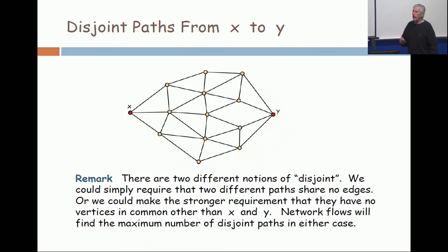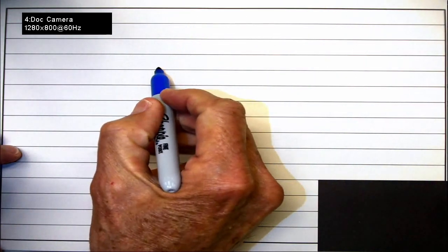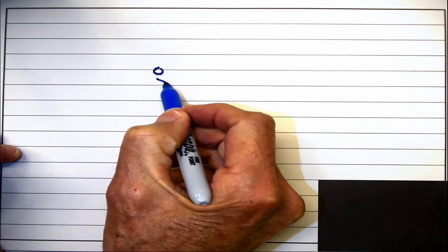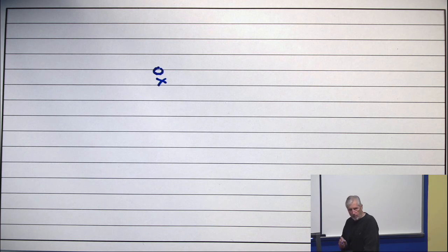Now, to do the vertex version, you need something that computer scientists call a gadget. So the idea is that if I have an interior vertex x, I only want one path going through x. Now, network flows, just like we saw with the green and blue path earlier, will allow more than one path to go through a vertex. In fact, it will allow a thousand as long as there are enough edges to support it.